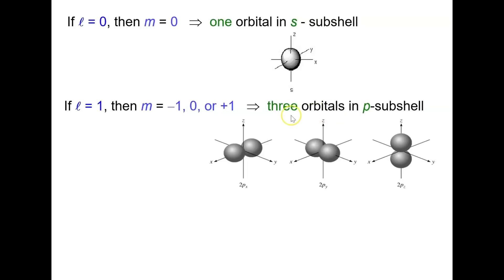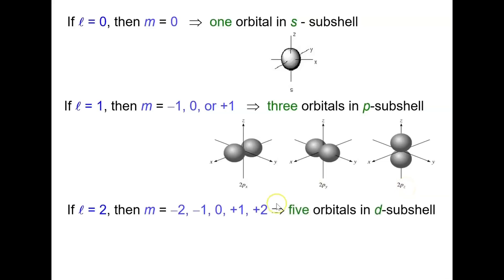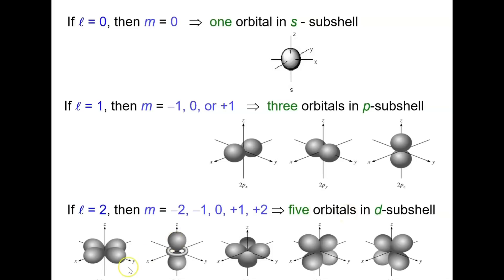The three P orbitals are represented as Px, Py, and Pz. If L=2, there are five orientations of M: −2, −1, 0, +1, and +2, meaning there are five orbitals in the D sub-shell, represented as dx²−y², dz², dxy, dxz, and dyz.